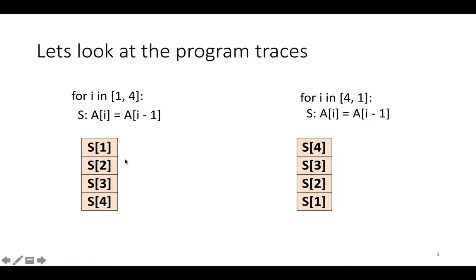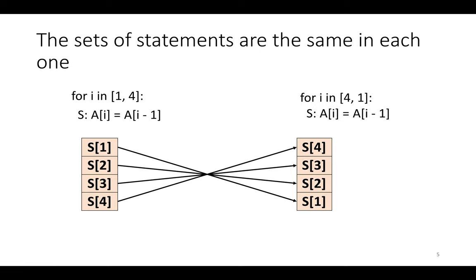So do these two traces executing this statement produce the same behavior, or do they have the same effect on the state of the world? Well, first let's observe that the sets of statements are actually the same in each one. It's just we've reordered them. So s4 goes from the bottom of the trace, the end to the beginning, and s1 goes from the very beginning to the very end, and so on.